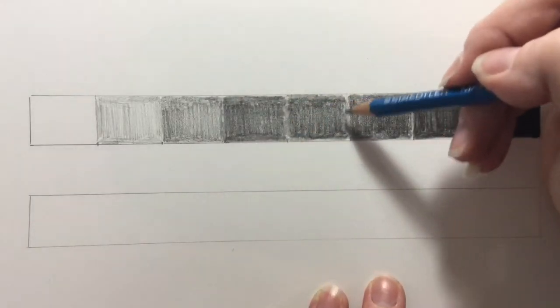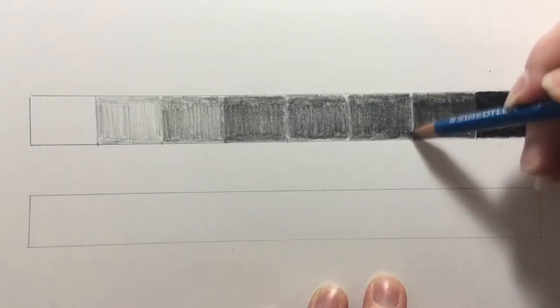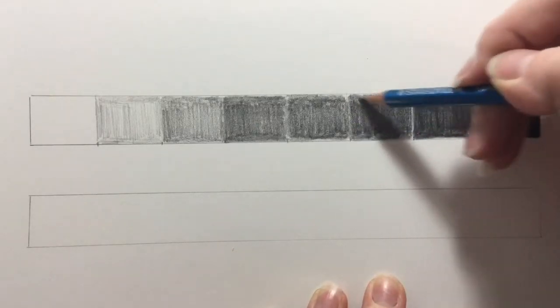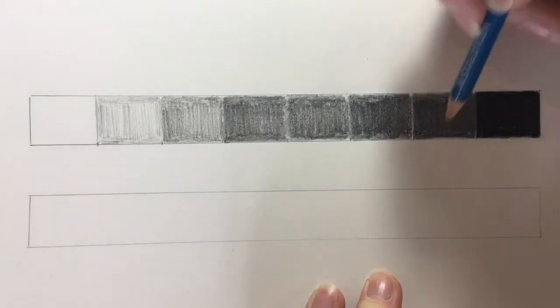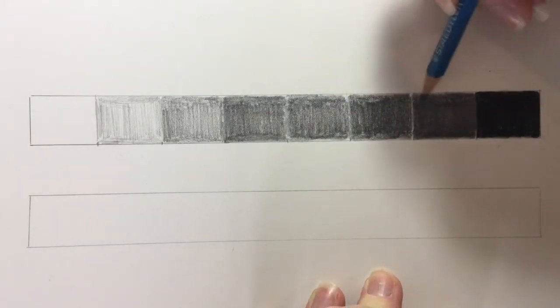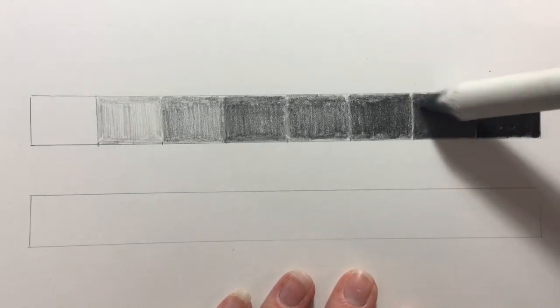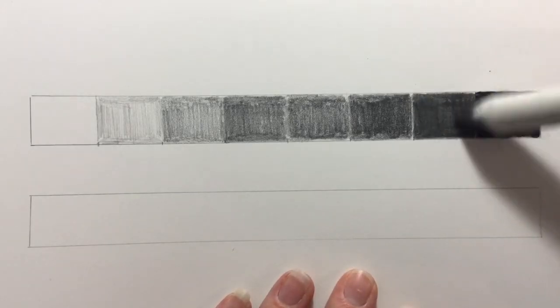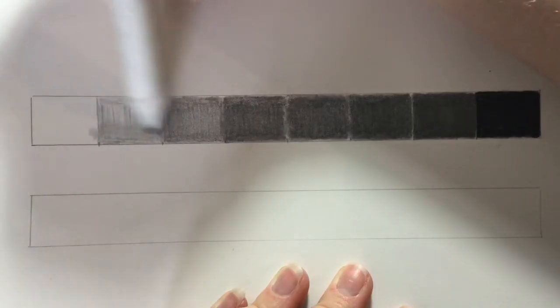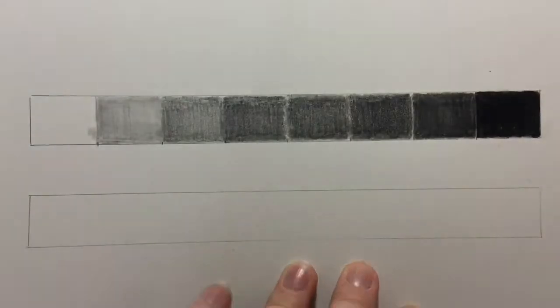That just means I'm going to have to make some alterations. I'm going to make the values on the right a few shades darker, and the values on the left a few shades lighter. Before I start to make those alterations, I like to go over my individual value boxes with a blending stump to even out all of my pencil strokes.